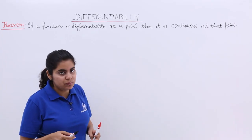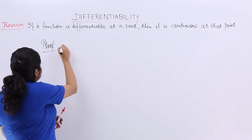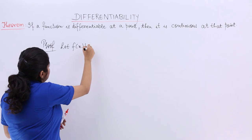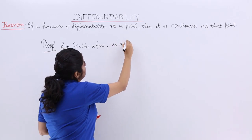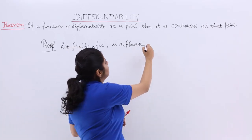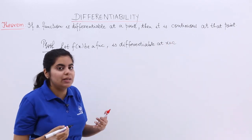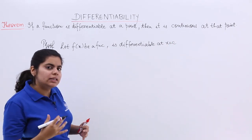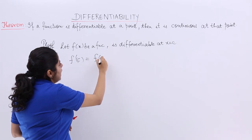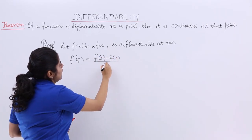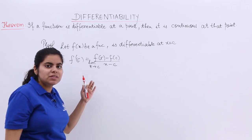Let's say I have a function and that function is differentiable at c. Let f(x) be a function and it is differentiable at x = c. Now the derivative f'(c) would be equal to the limit as x tends to c of f(x) minus f(c) upon x minus c. Because we have seen the definition of derivative.